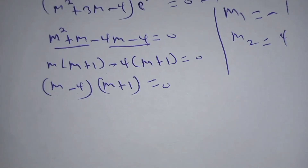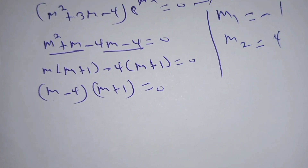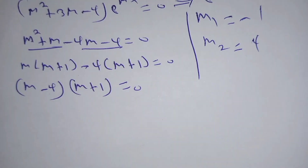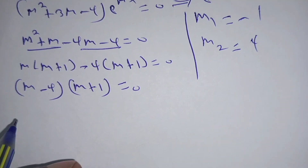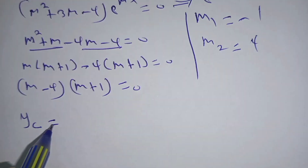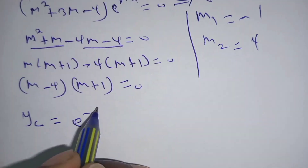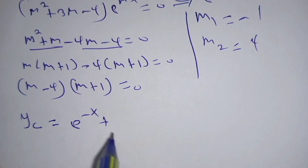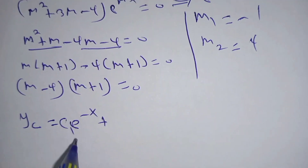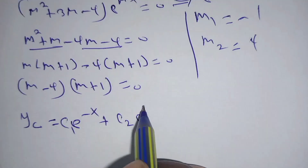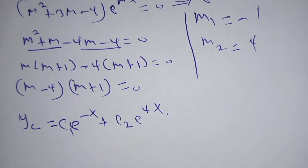From those roots, we write our complementary solution, which is given by yc equals c1·e^(-x) plus c2·e^(4x).